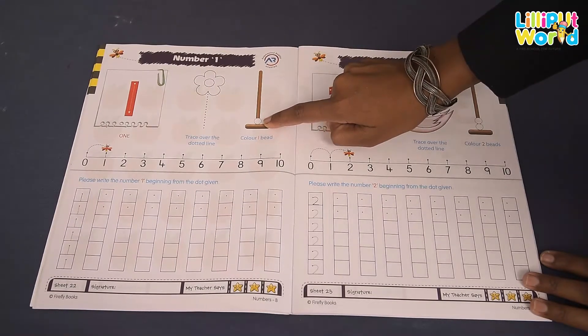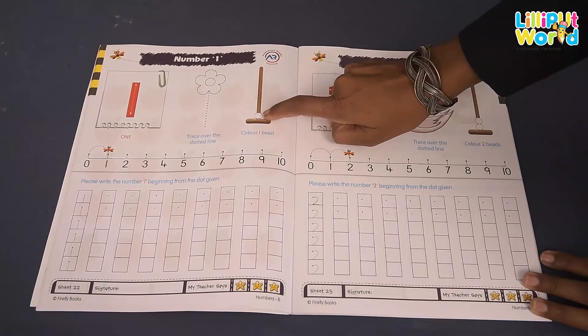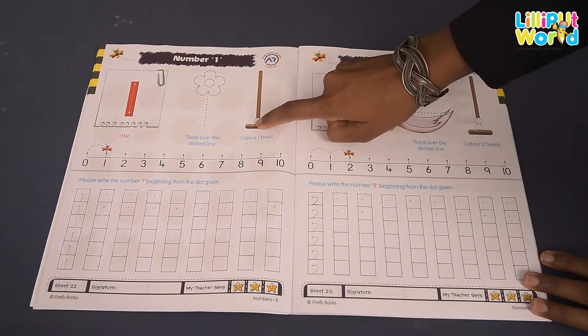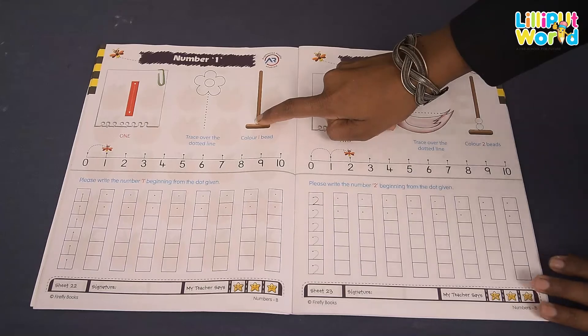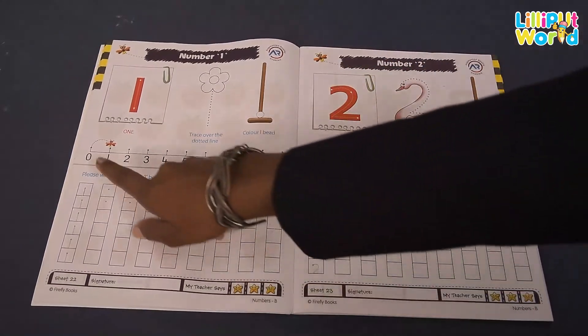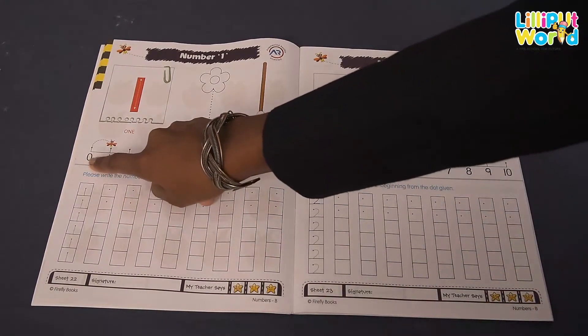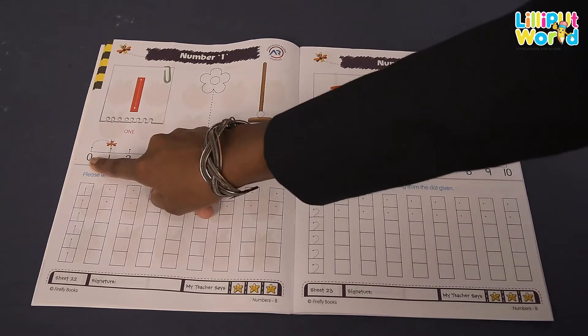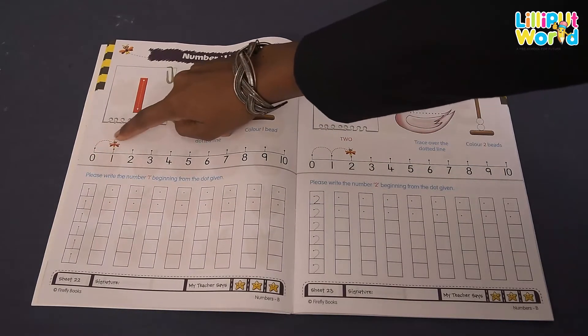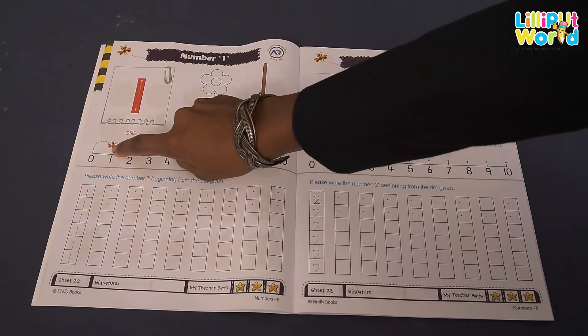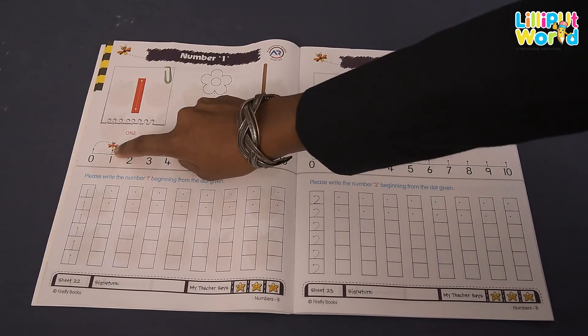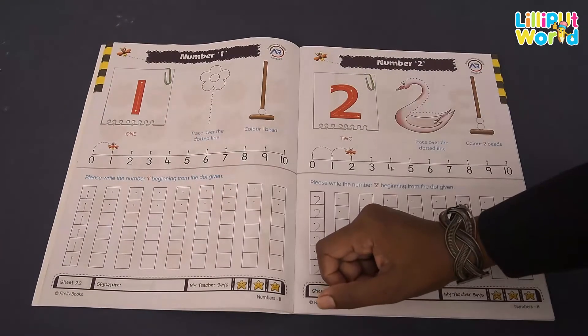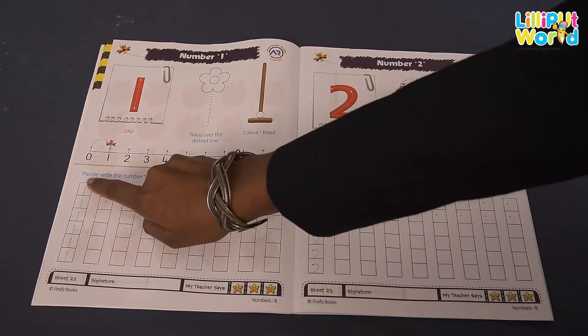You have to color one bit. Now go to the number line - you have to jump only one time, from zero to one. Which number is it? Number one. Next, you have to read the number one.